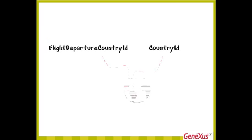To define subtypes, we must first create a group of subtypes. We select File, New, Object, choose the subtype type, and name it FlightDeparture. We type in a period and GeneXus will suggest the attributes starting with FlightDeparture that we had already defined in the flight transaction. We select FlightDepartureCountryId, press Tab, and since we want it to be a subtype of CountryId, we select CountryId as its supertype. Then we add FlightDepartureCountryName as subtype of CountryName, FlightDepartureCityId as subtype of CityId, and FlightDepartureCityName as subtype of CityName. And we save.